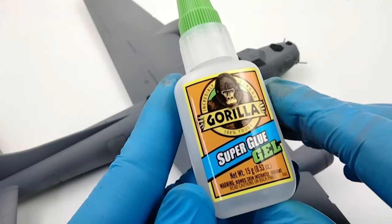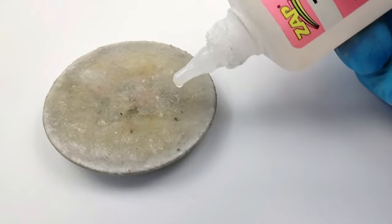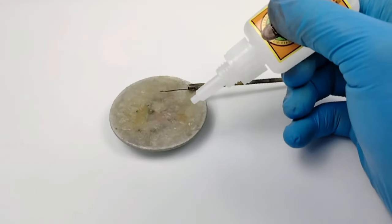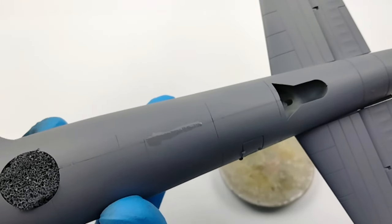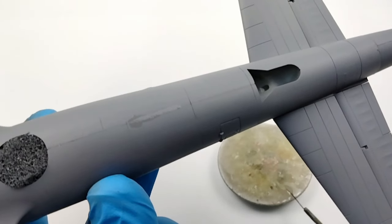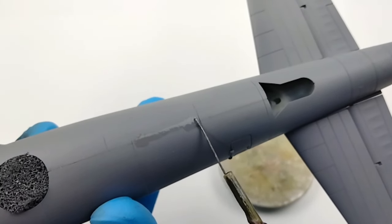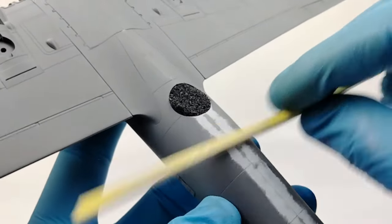When it comes to hairline seams and gaps that are under one millimeter in width, my go-to filler is super glue or any type of CA cyanoacrylate glue. I always keep two viscosities nearby, a thin CA and a gel gap filling CA glue. Thin CA glue flows nicely through capillary action into hairline seams. It dries relatively quickly and dries very flat to the surface. It can be sanded easily and even polished if necessary.